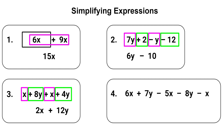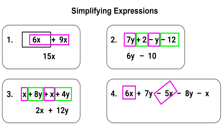The simplified expression for number three is 2x plus 12y, which equals the original expression. For number four we have 6x plus 7y minus 5x minus 8y minus x. Starting with 6x, we combine it with minus 5x: 6x minus 5x equals 1x. Remember the number one is not commonly written in front of a variable since one multiplied by anything equals that number, so let's remove the one.